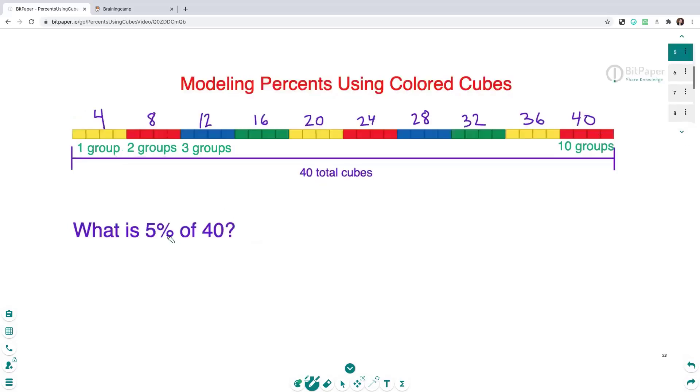Okay, let's go ahead and figure out if we know that 10% equals four, then what's 5% of 40? Well, I've noticed that 10% is twice as much as 5%. So that means that 5% is one half the size of 10%. So 10% are these four cubes right here. That means that 5% is actually only going to be these two cubes right here. So 5% of 40 is two.